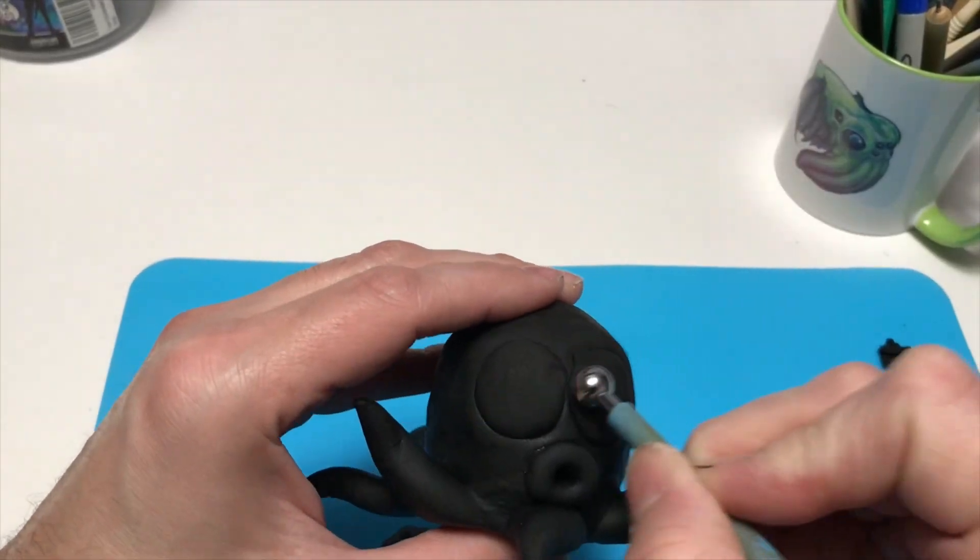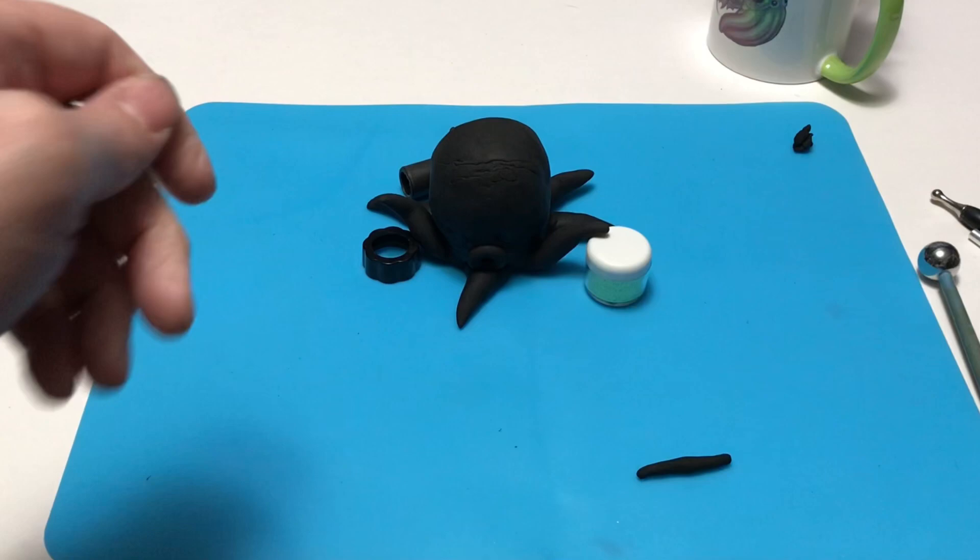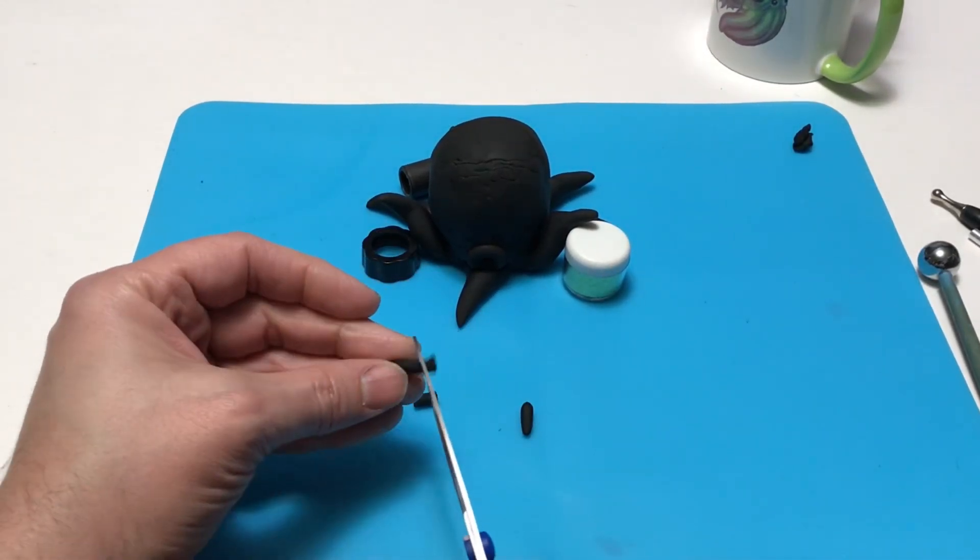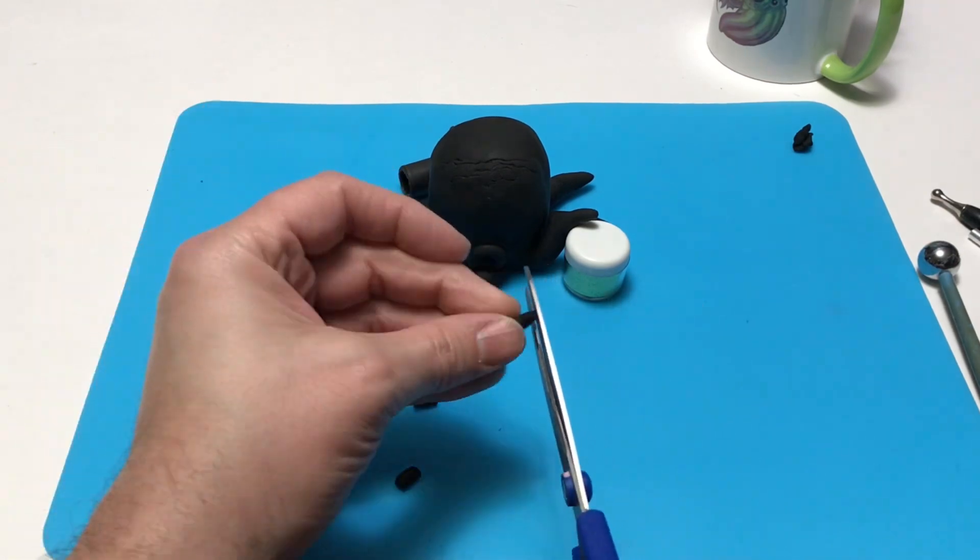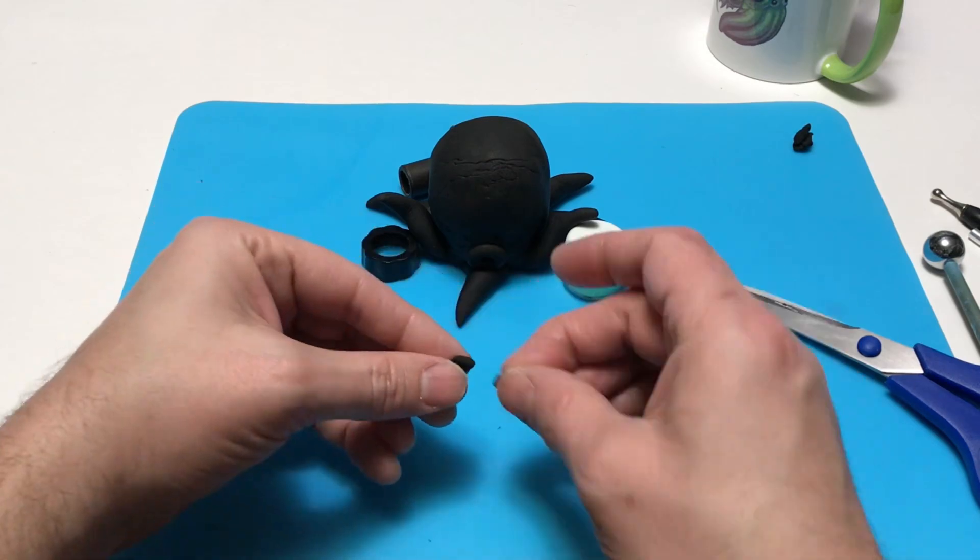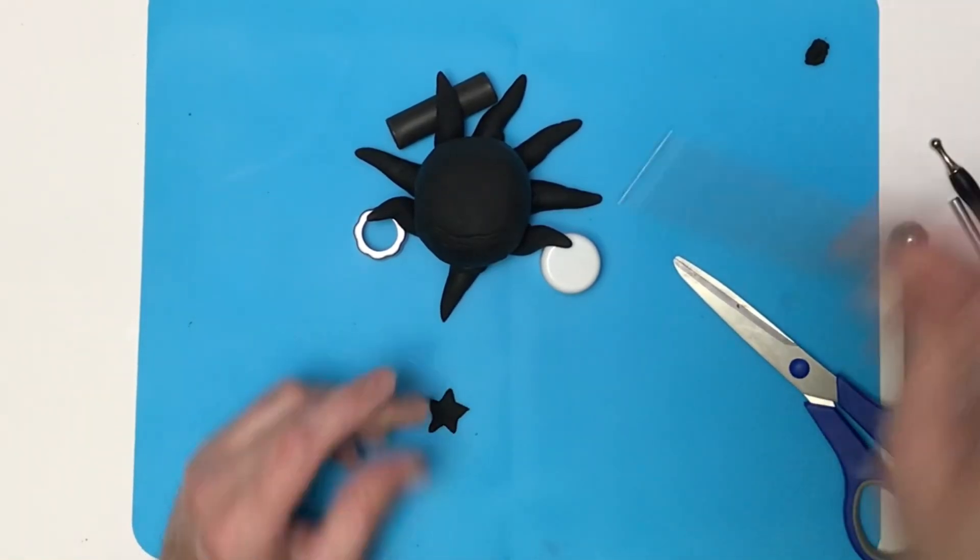Now I didn't like the eyes, so I decided to smooth those out and just paint those on. You can see here I've got a few things propping up the tentacles so they're not just all laying flat. Now I want to make a little starfish to sit on his head. It's not really a hat, it's more like just a little buddy that's kind of hanging out on him. So I've got that sculpted. I want to add a little bit of texture to it.